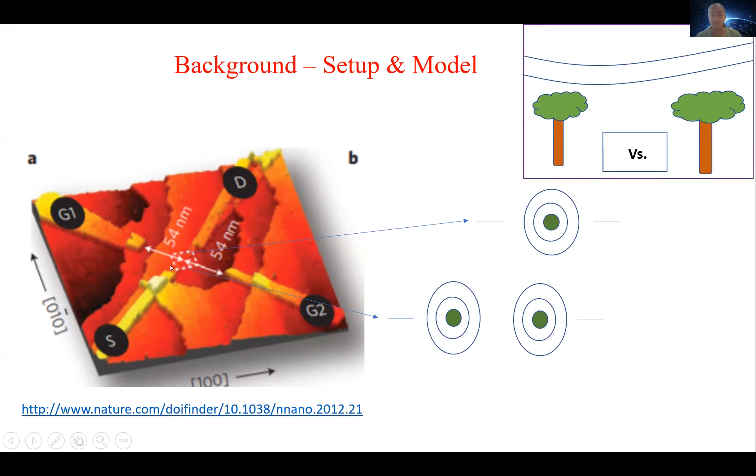And here's a picture of the experimental system. There's three main regions of this transport. There's the central region, which, depending on which system we're investigating, has either one or two phosphorus atoms. The source electrode, which is connected to the central region with metal leads on one side, and the drain electrode connected in the same way on the opposite side.